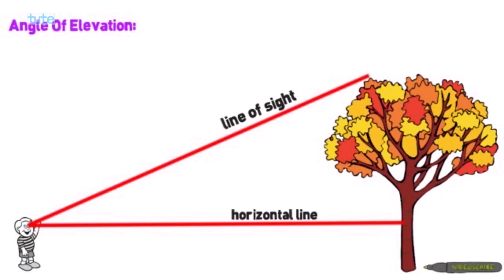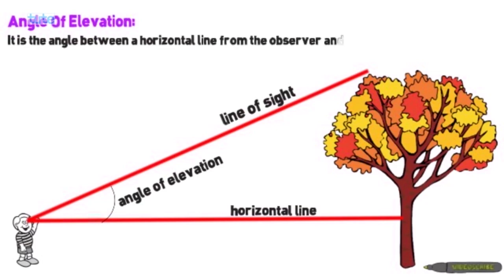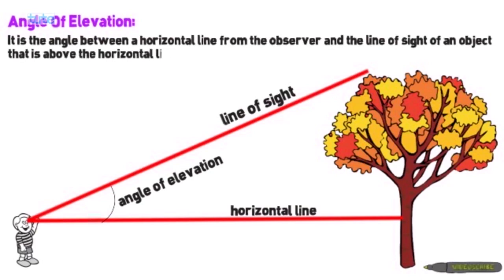These two lines make a particular angle, and that angle is called angle of elevation. Angle of elevation is the angle between the horizontal line from the observer and the line of sight of an object that is above the horizontal line.